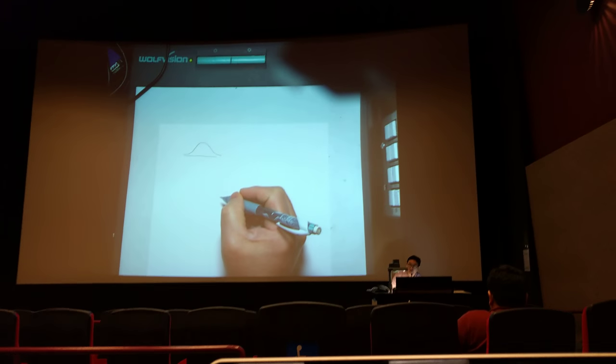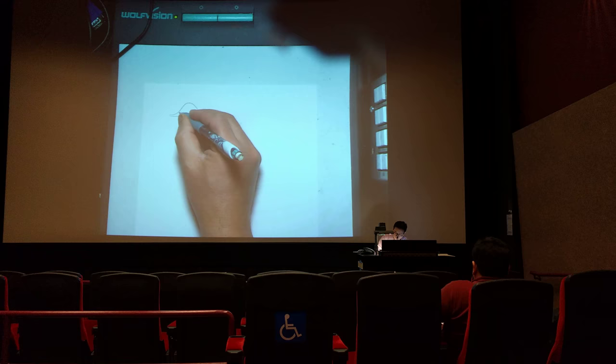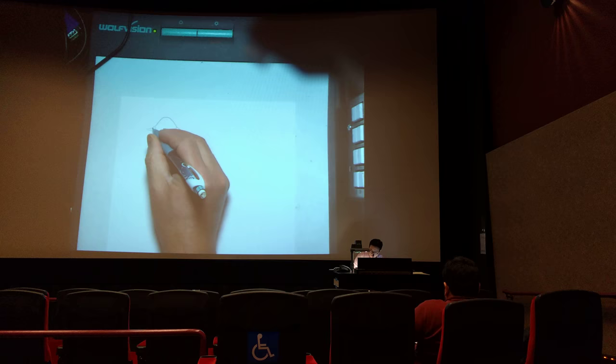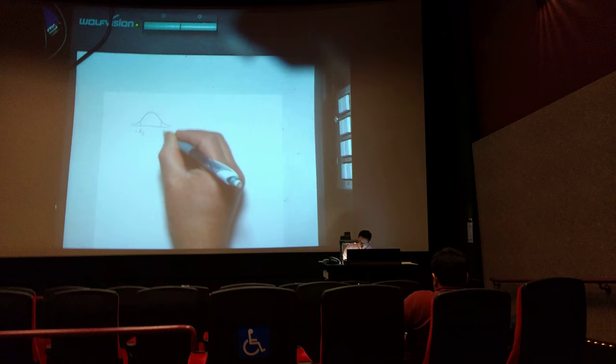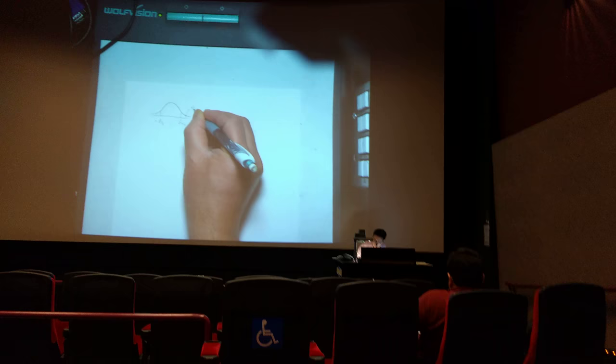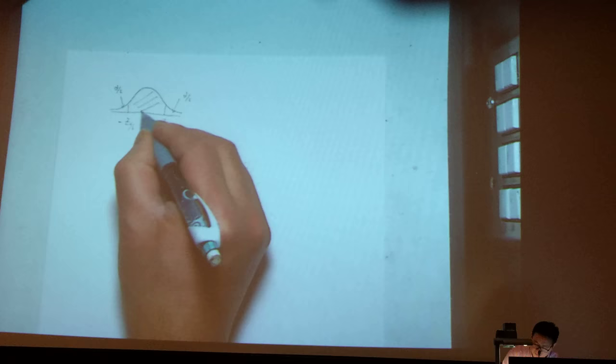This is a normal distribution. So you have this distribution and we already know how we define the rejection region and the non-rejection region. Negative z alpha by 2 and this one. So this part is actually alpha divided by 2. This is alpha divided by 2. So this one actually gives us the alpha.